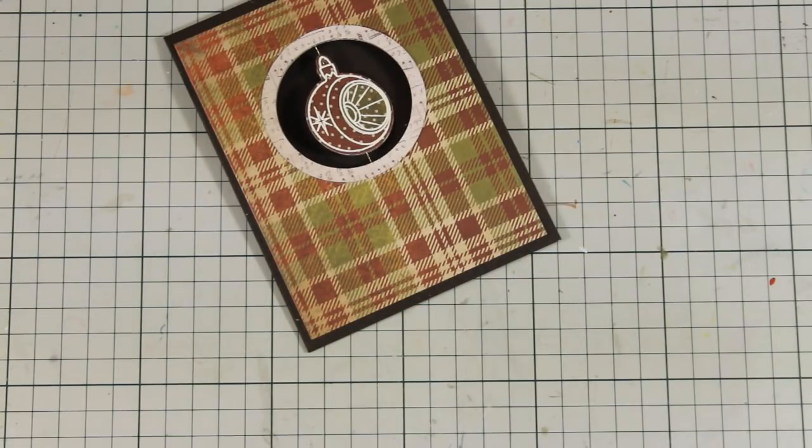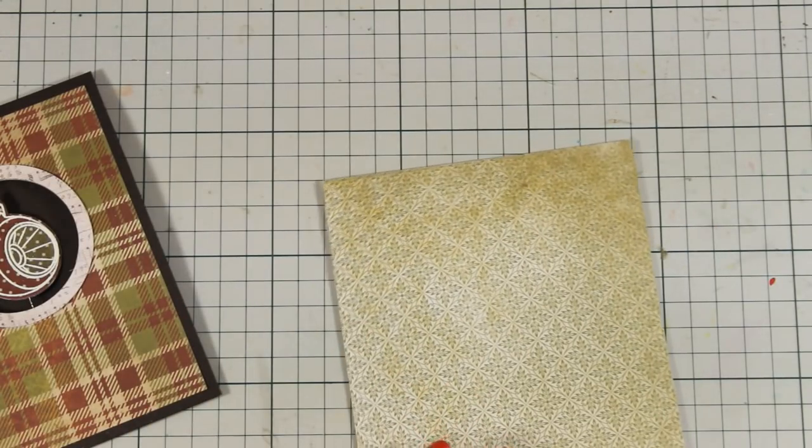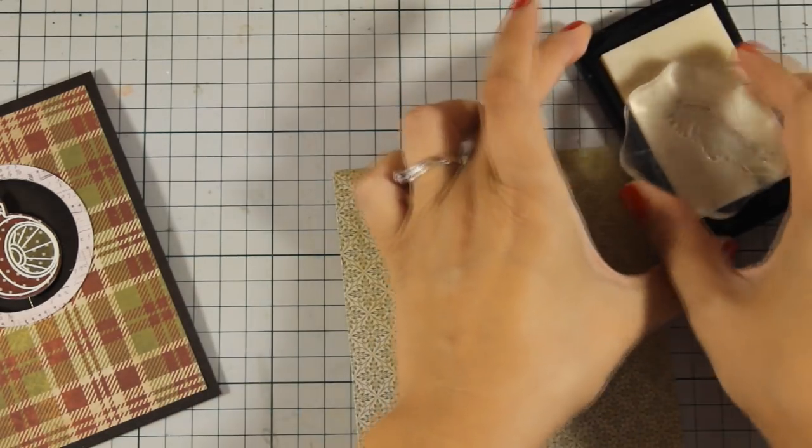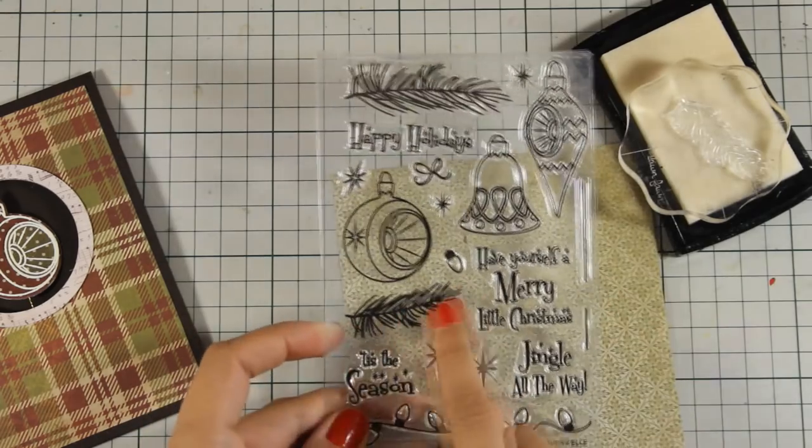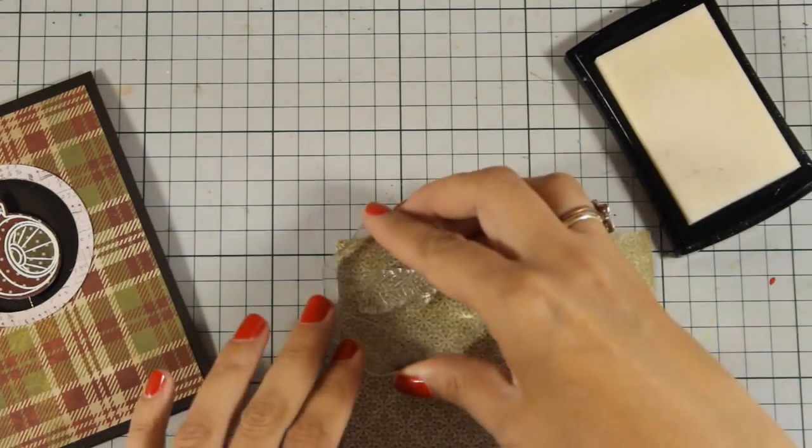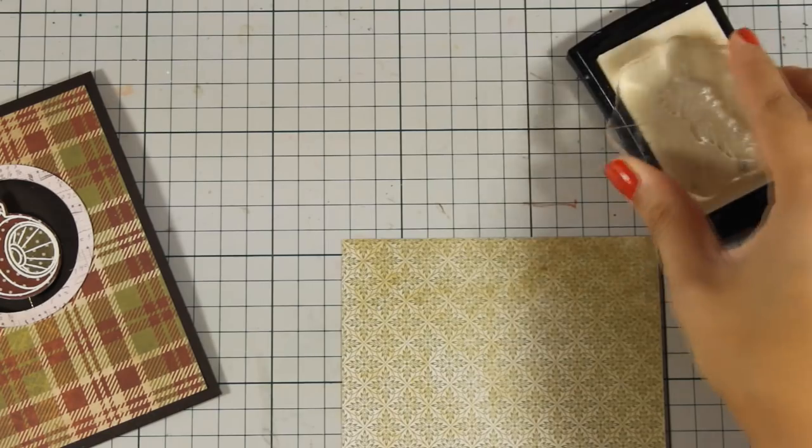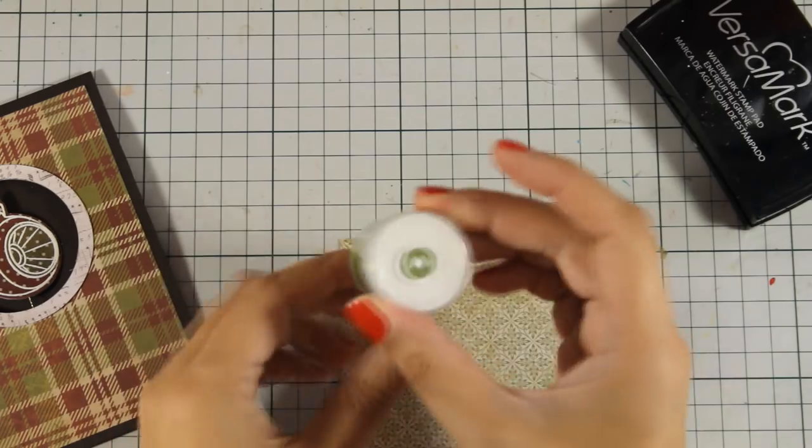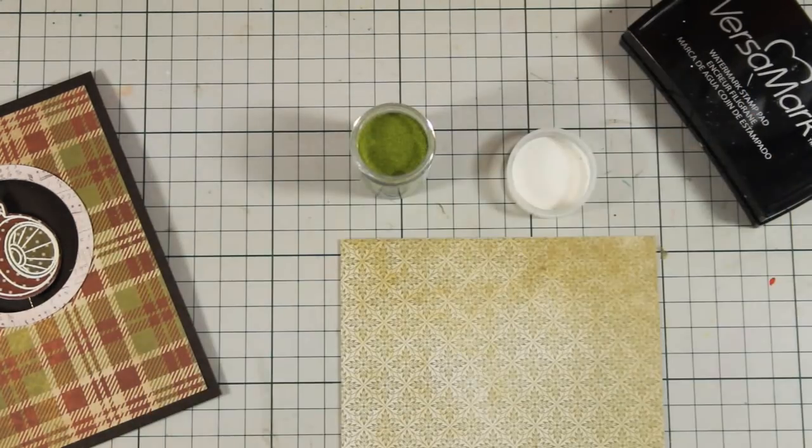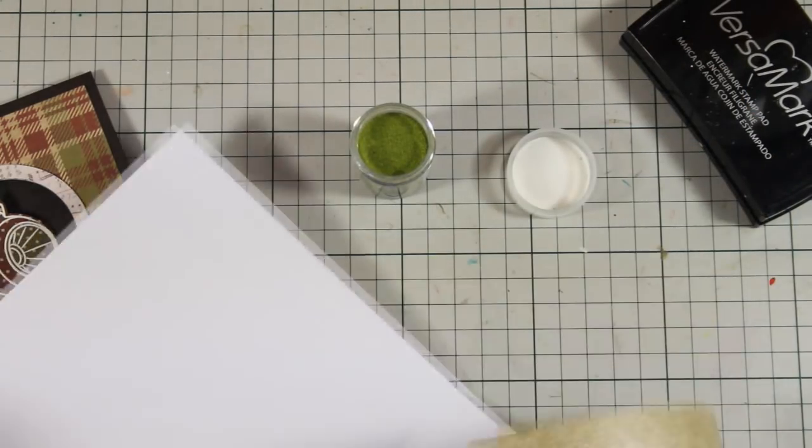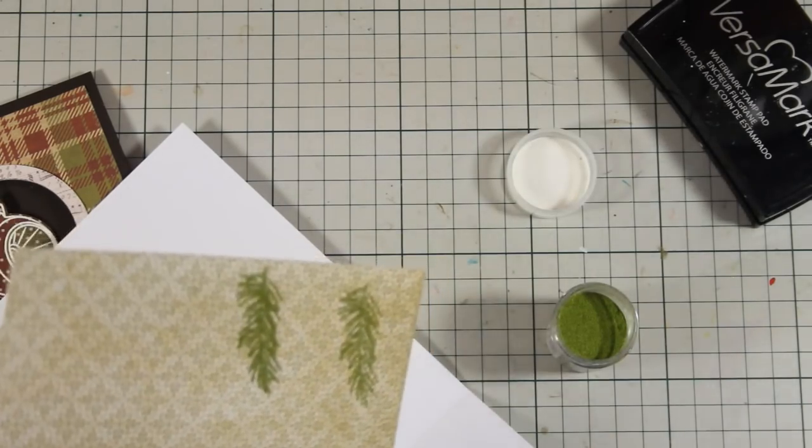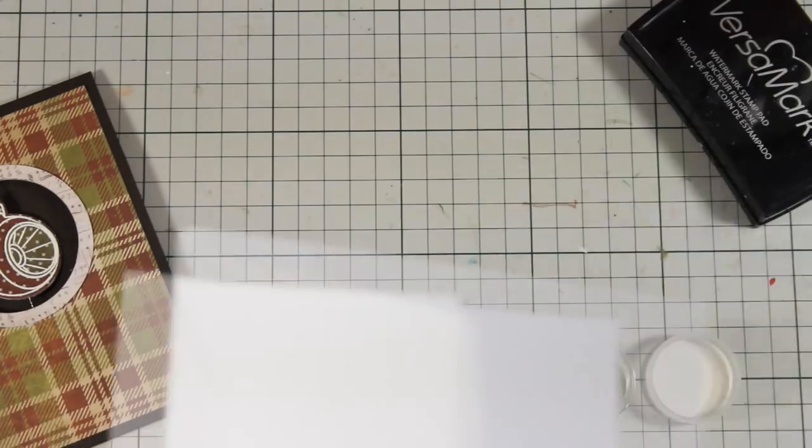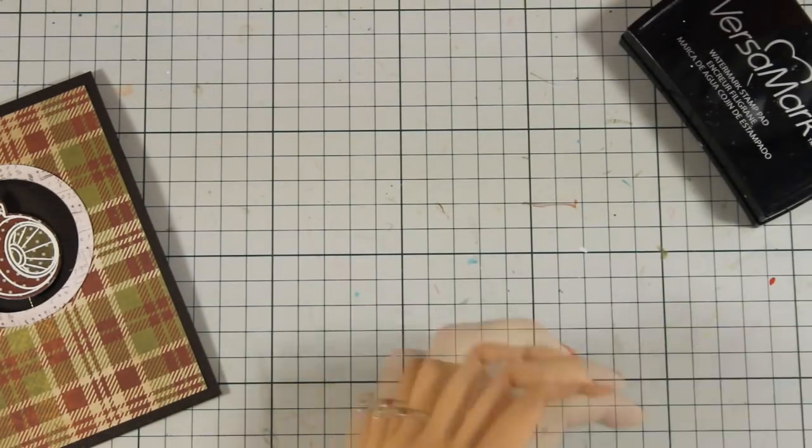And now to embellish my card even more I am going to use this pattern paper and I am going to stamp on top one of the branches that is available in the stamp set. I am going to show you which one it is. I am going to stamp it with Versamark ink and I am going to apply some green embossing powder. The embossing powder that I am using is by WOW and I think that that color matches perfectly the card. You can also just stamp with any green ink pad that you have if you don't have green embossing powder.